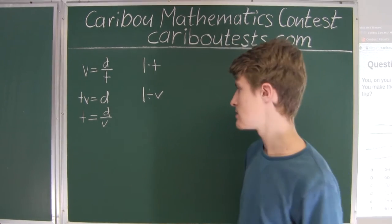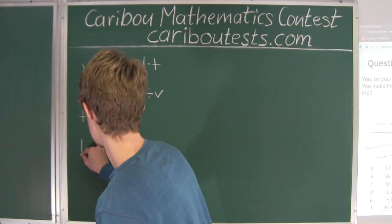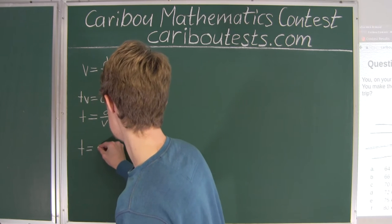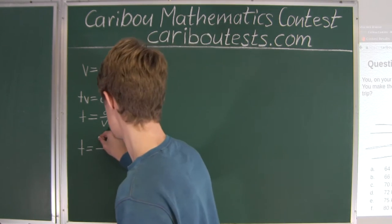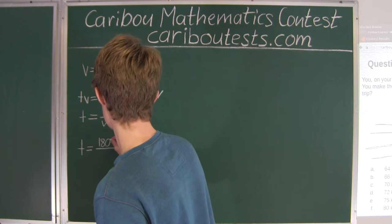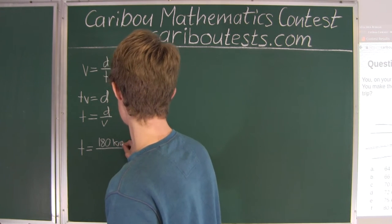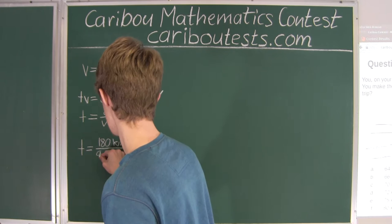Now we can substitute in these values. So we have T is equal to 180 km divided by 90 km per hour.